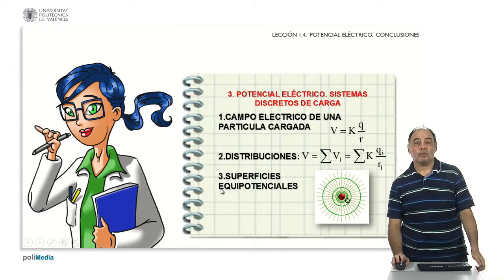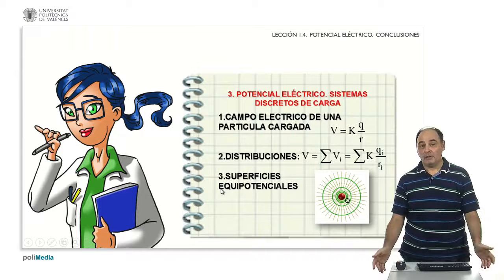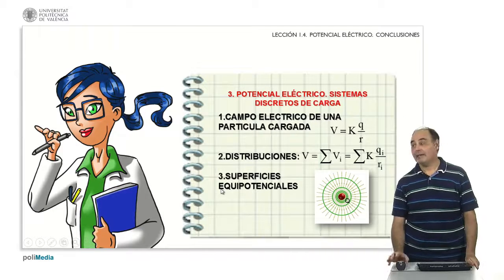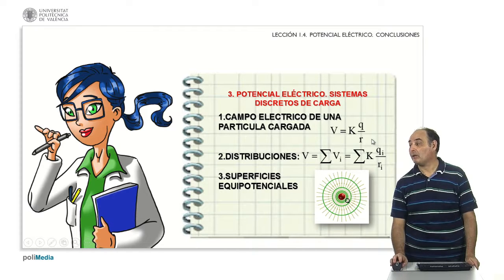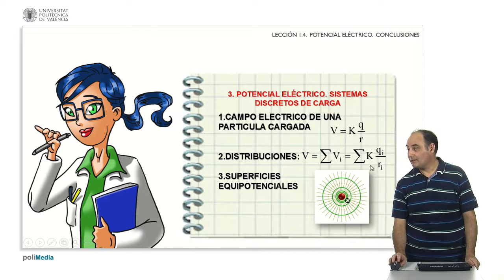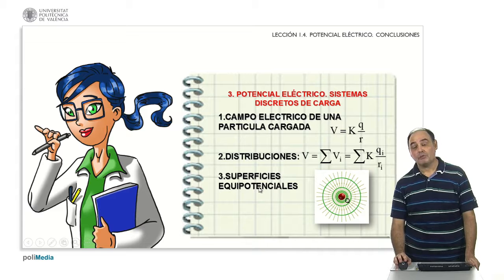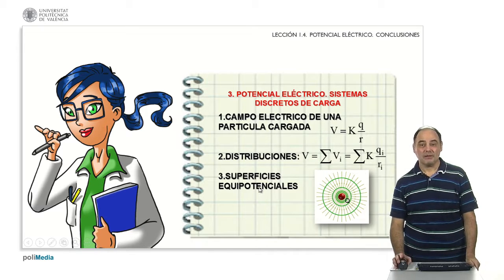So what have we seen in this topic? Summarizing: first, the expression of the potential created by a point charge, V = kQ/r, quite simple to remember. Second, that for the case of distributions, what I have to do is add the corresponding expressions of the individual charges. And finally, we have given the concept of equipotential surface and the most relevant properties. Thank you very much for your attention.